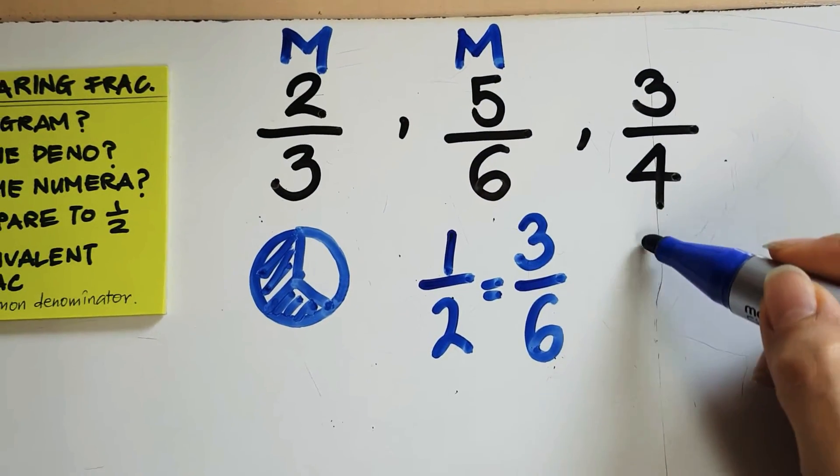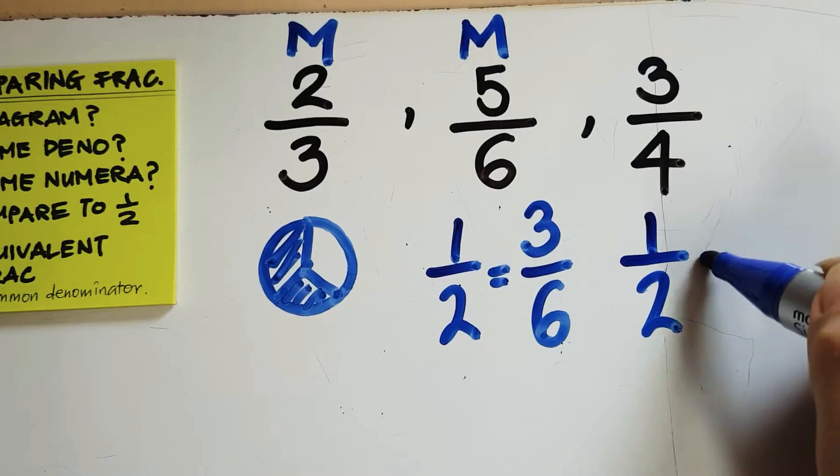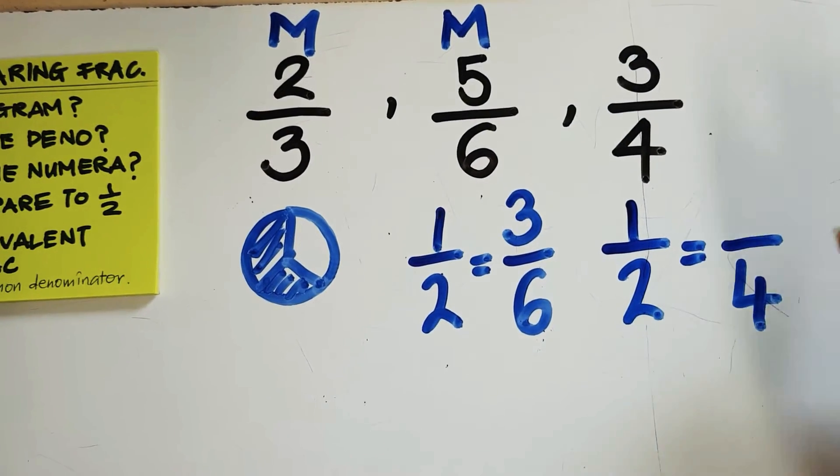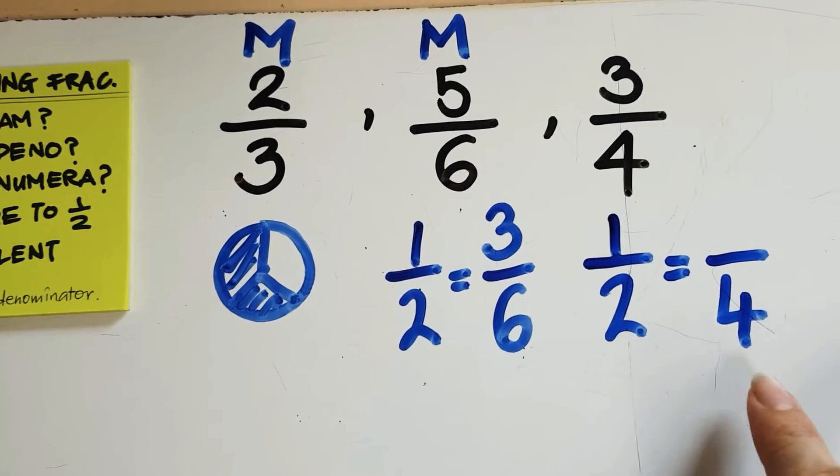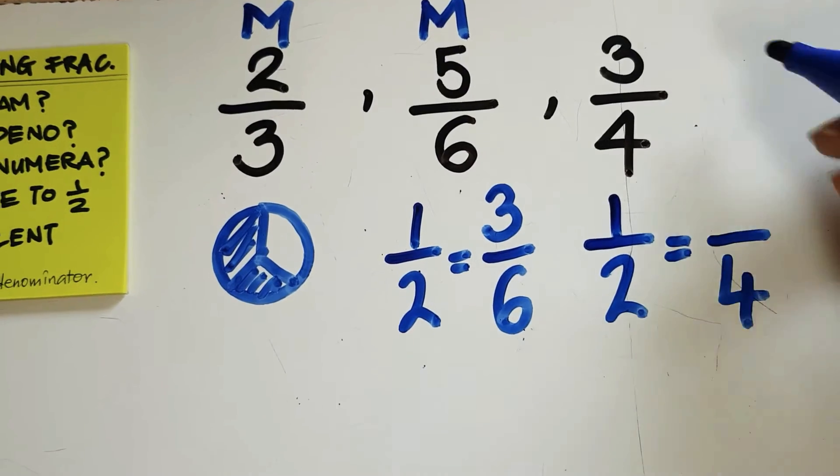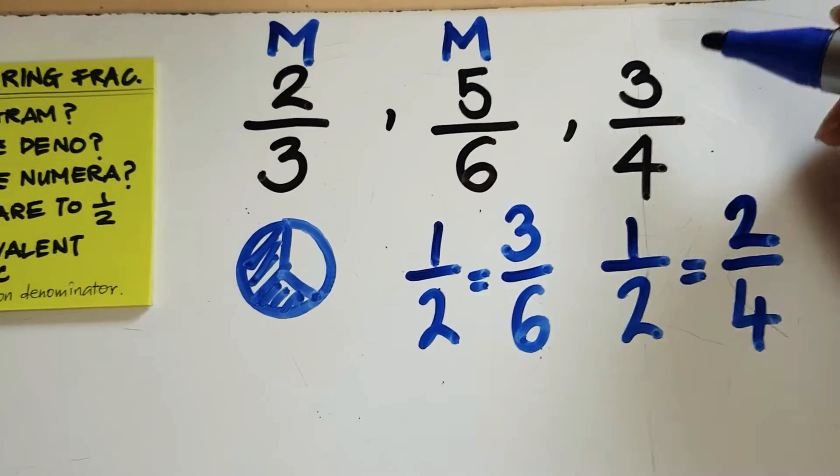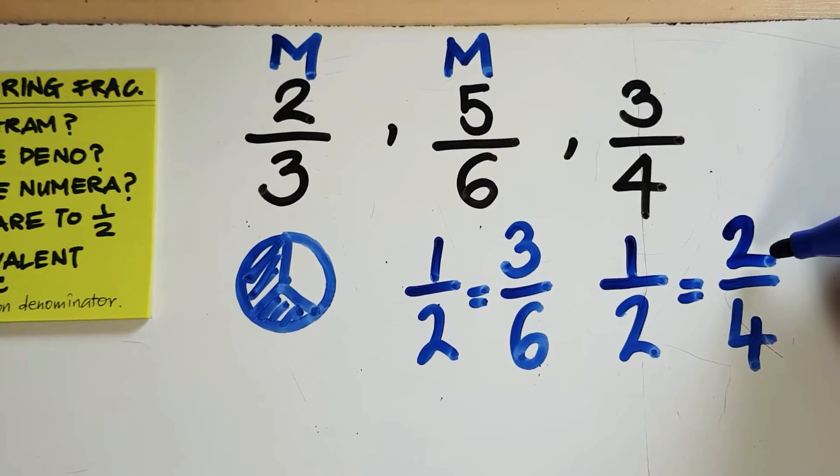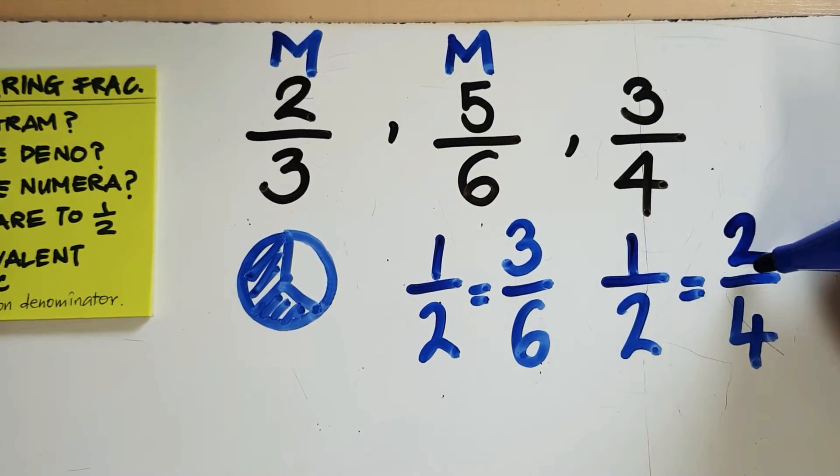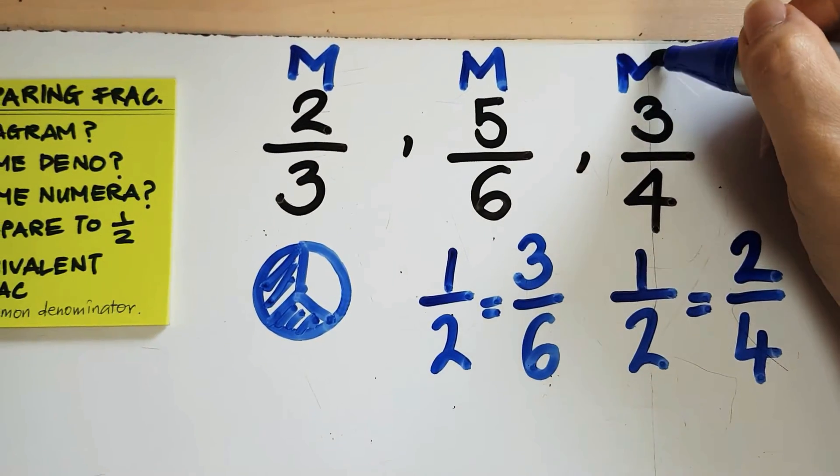Now, if I look at three-fourths, I would have four pieces. What would be equivalent to half if I had four pieces? I would need two-fourths. Now, three-fourths is more than two-fourths. Three pieces of fourth is more than two pieces of fourths, so I'm going to put an M there.